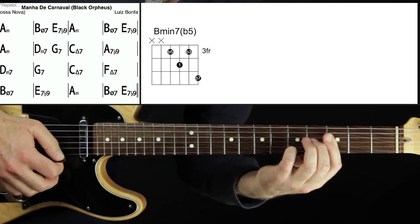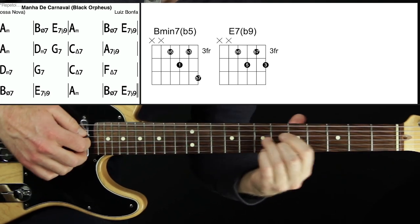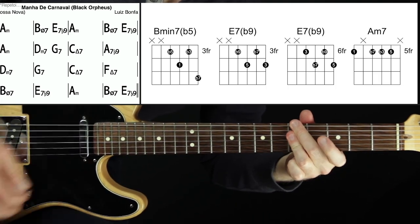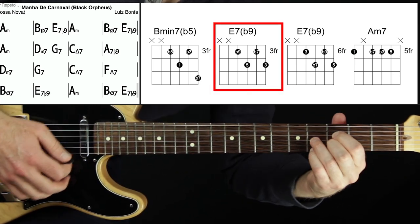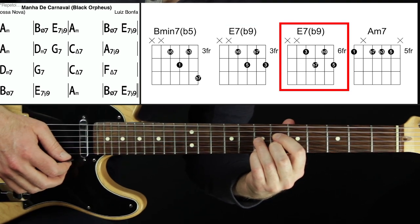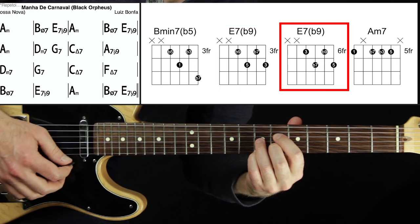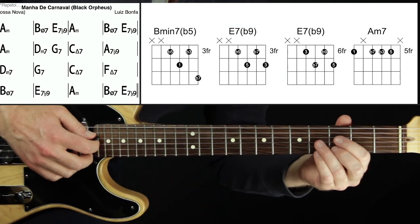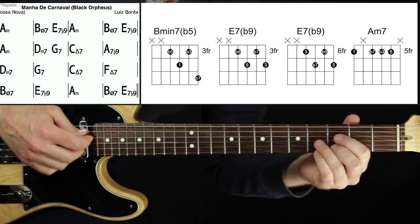So we're on B half diminished right now. We're only on the second measure. Okay here's the E7 measure. And then down to A minor. Okay so this diminished shape is a shape that we will use in chord melody extensively if we're playing a dominant seven flat nine chord.